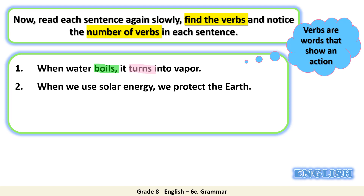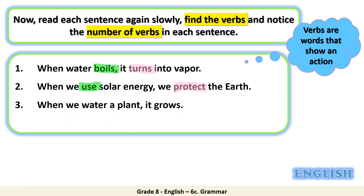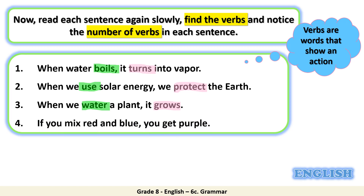Number two: when we use solar energy we protect the earth. Where is the verb in this sentence? Use. Any other verb? Protect. Number three: when we water a plant it grows. Where is the verb? Water — and grows. Last one: if you mix red and blue you get purple. Where are the verbs here? Mix and get.